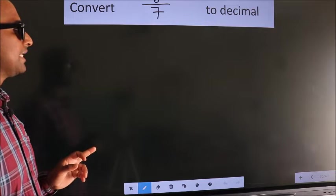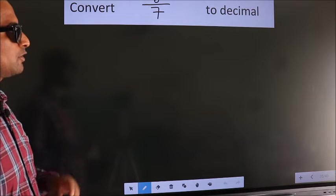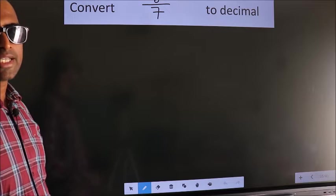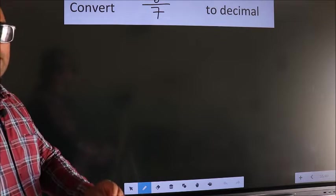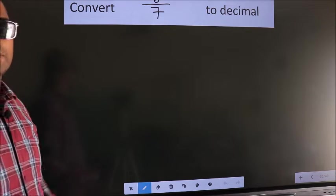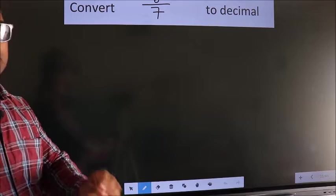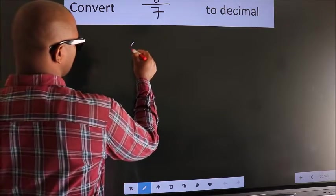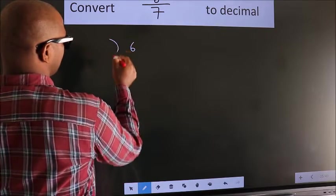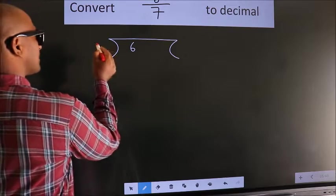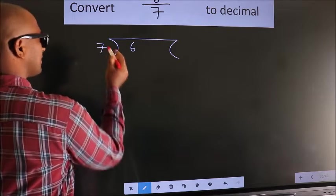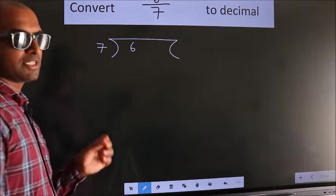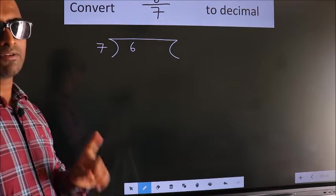Convert 6 by 7 to decimal. To convert this to decimal, we have to divide. And to divide, we should frame it in this way. 6 here, 7 here. This is your step 1.